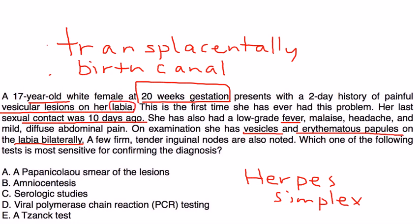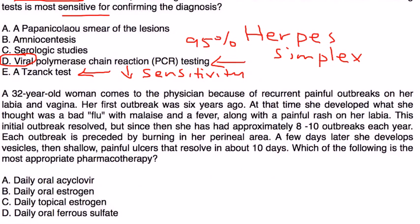If it's transferred to the fetus, the fetus can have very high risk of problems such as neurologic disease, so it's very important that you treat this. The most sensitive of the tests is PCR; it has 95% sensitivity. Tzanck test is also used but it has very low sensitivity. So the correct answer for this question is D.